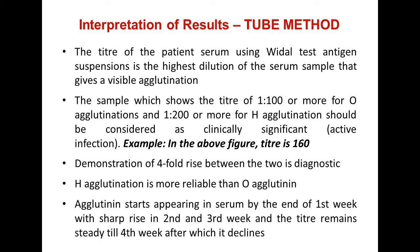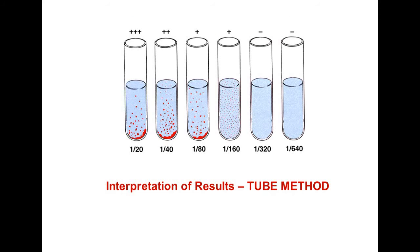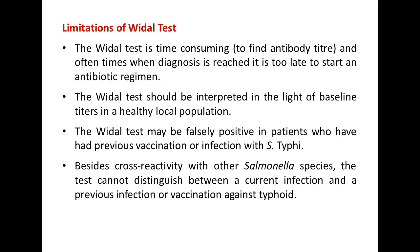Antibodies start appearing in the serum by the end of the first week, with a sharp rise in antibody titer by the third week, followed by a decline after the fourth week. Case history — when fever began and how long it persisted — is very important. Agglutination reactions are graded as single positive, double positive, and triple positive.